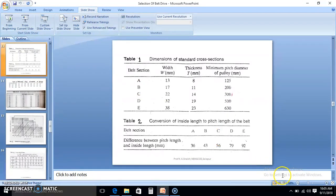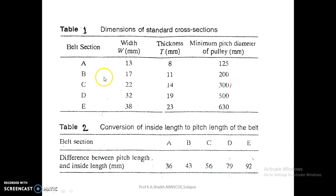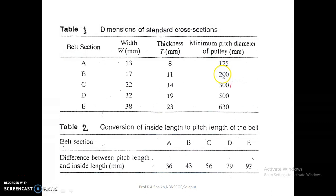For type B cross section, from the standard table: width is 17 mm, thickness is 11 mm, and the minimum diameter is 200 mm. If the problem specifies a minimum diameter, use that; otherwise select 200 mm. This completes step number two — selecting the cross-section type based on kilowatt design.